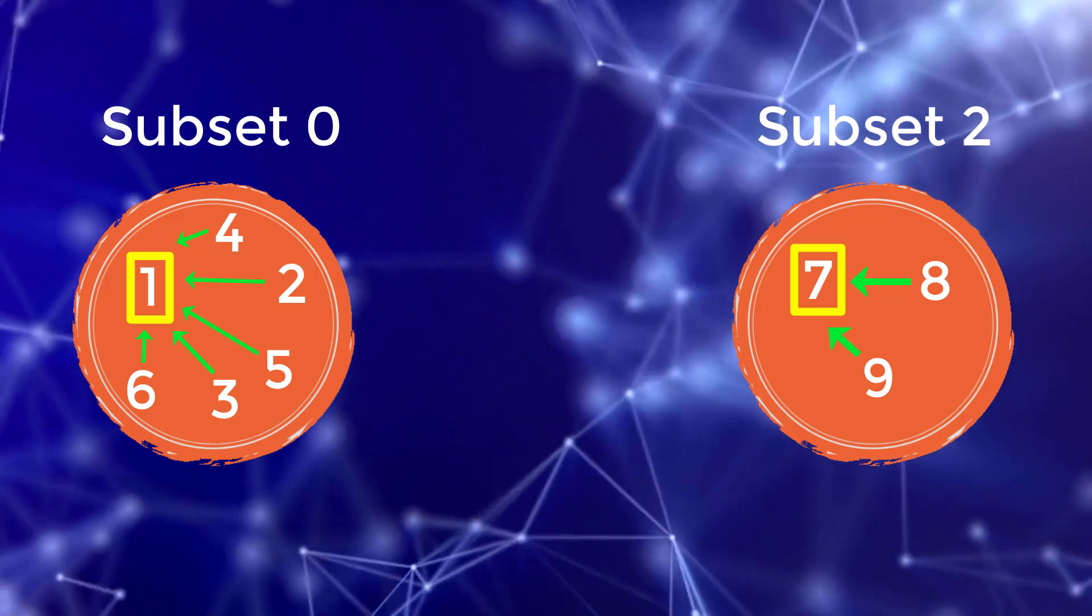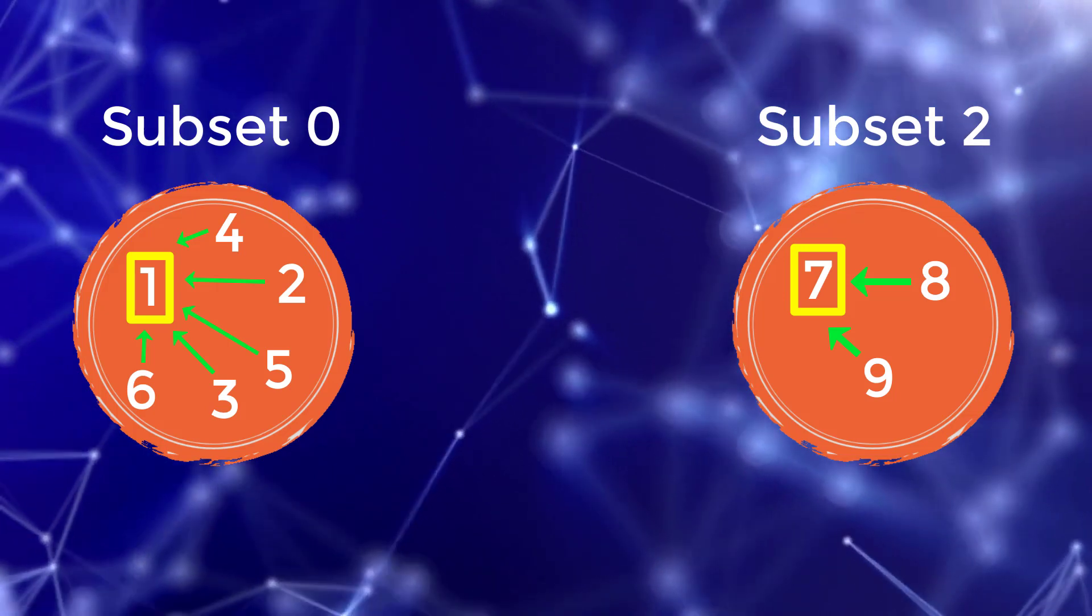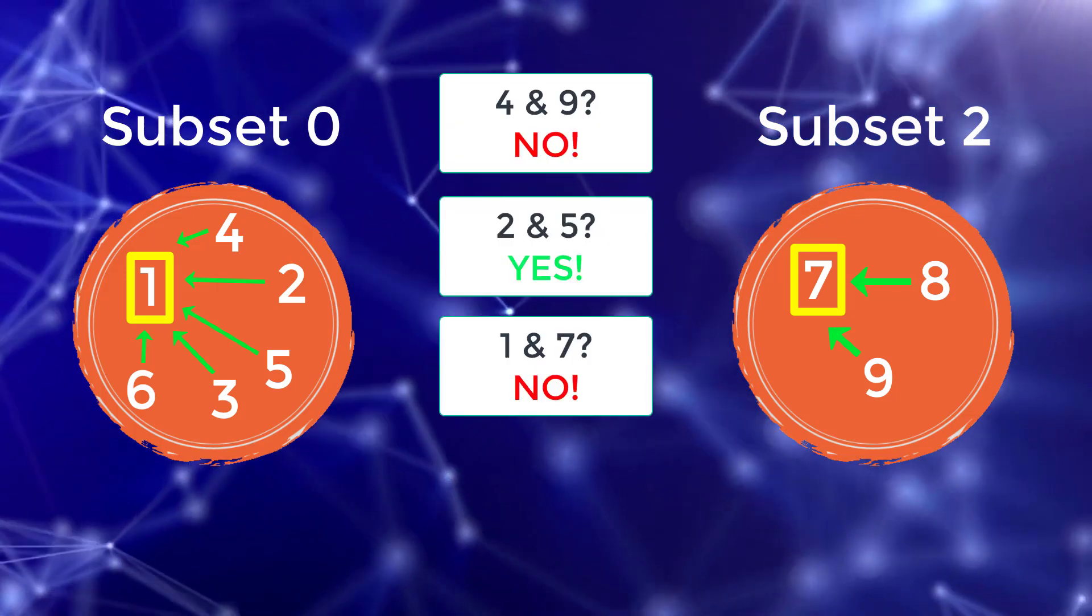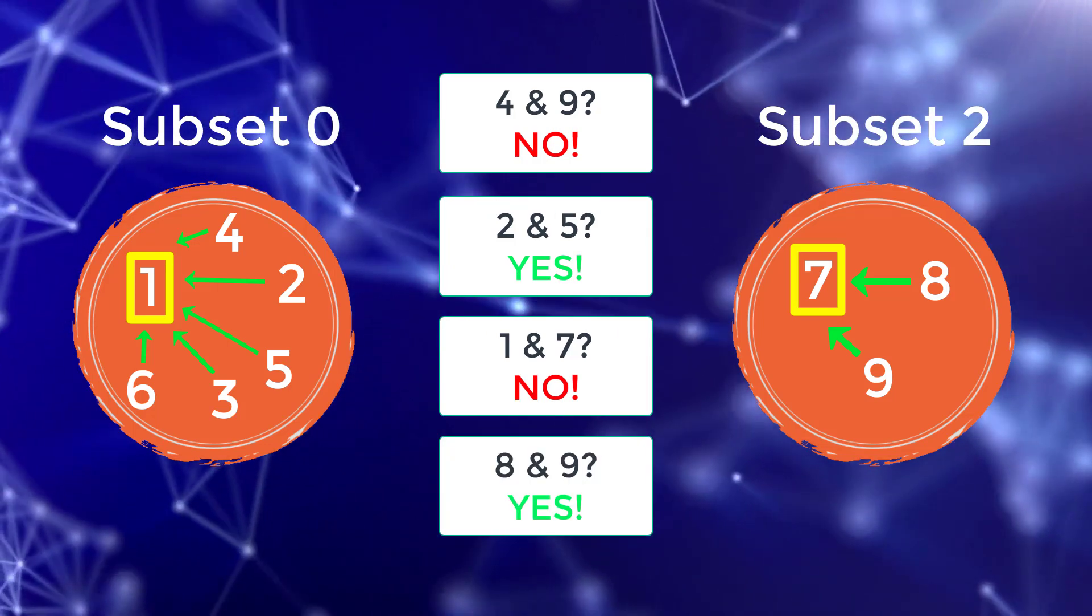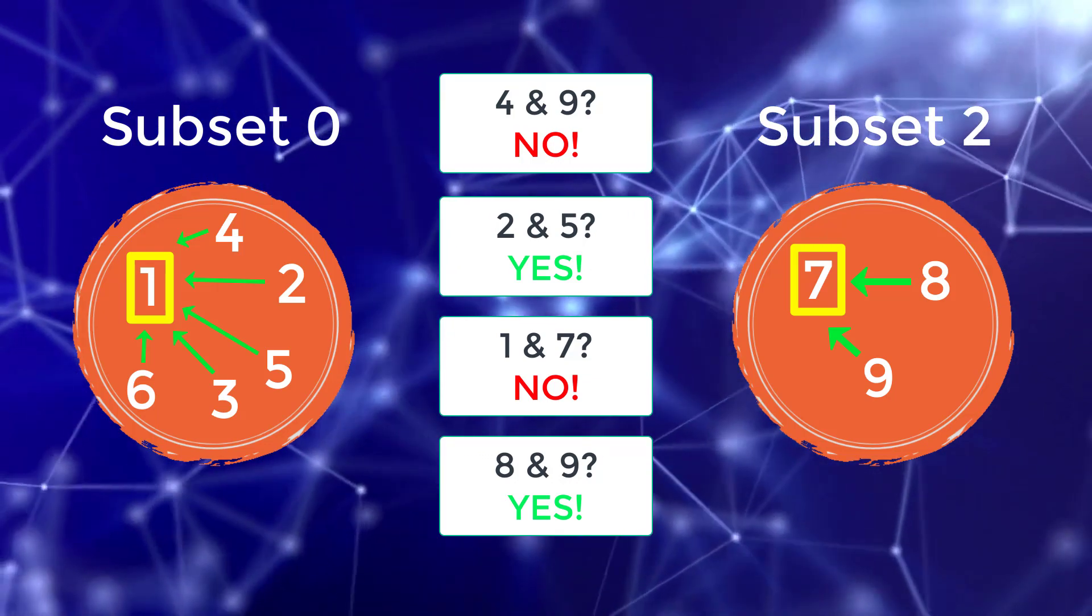I can also say, determine if two numbers are in the same subset. This is done using the find operation. If I want to check if two numbers are in the same subset, all I have to do is check if their parents are the same. If their parents end up being the same, that means they are in the same subset.